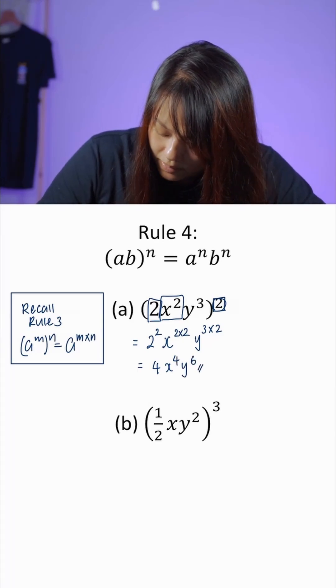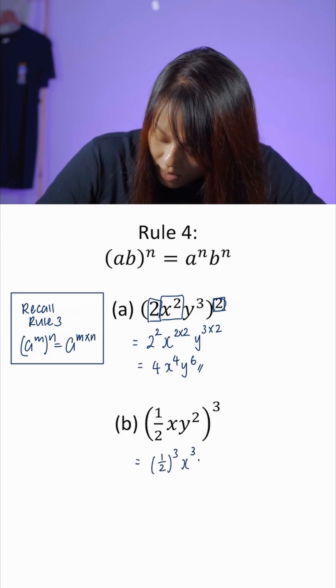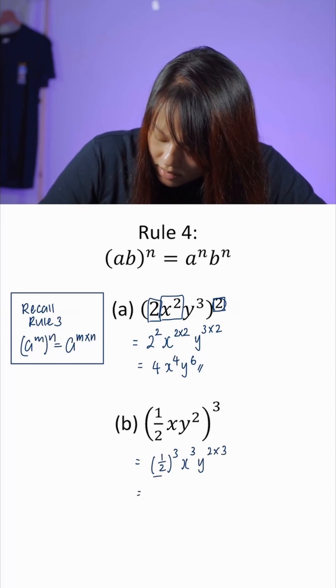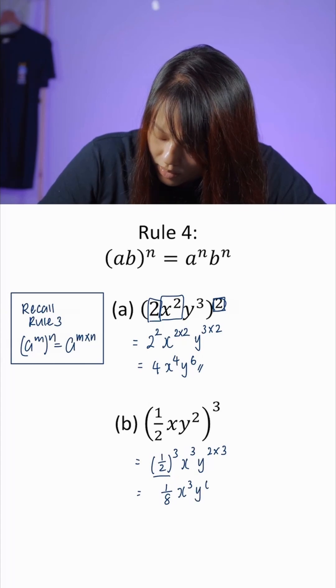Now let's look at part b. Applying the same concept we'll have (1/2)^3, x^3, and y^(2×3). Simplifying this we'll get 1/8 x^3y^6.